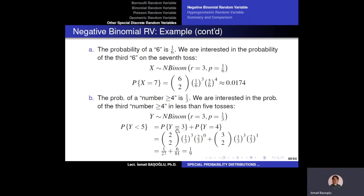We can stop either in 3 tosses or in 4 tosses. The probability of stopping in 3 tosses means all 3 die tosses result in a number greater than 4, with no failures, so the coefficient is 1. For y equals 4, we observe the 3rd success on the 4th trial: exactly 3 successes and 1 failure, with exactly 2 successes among the first 3 trials. These two probabilities compute to 1 over 27 and 6 over 81, summing to 1 over 9.